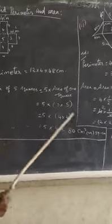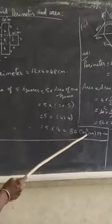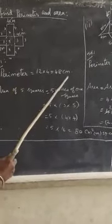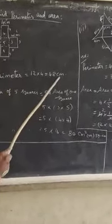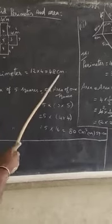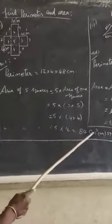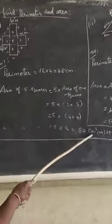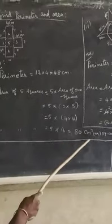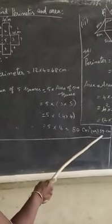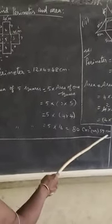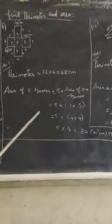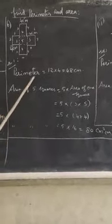You must write the units in the form of centimeter square. For area, write centimeter square; for perimeter, write simply centimeter. This is a combined shape perimeter and area problem.